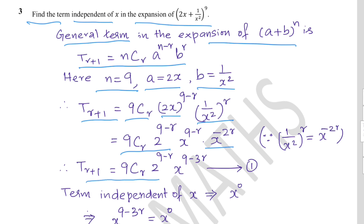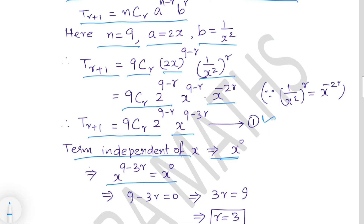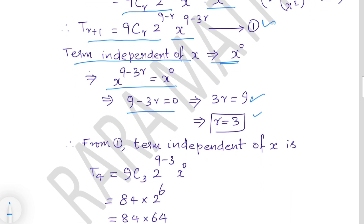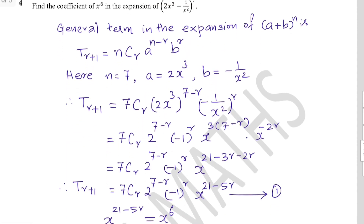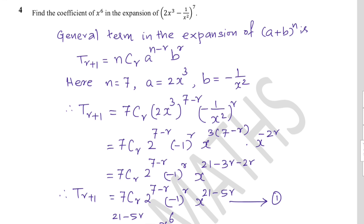Equation 1: T(r+1) = 9Cr · 2^(9−r) · x^(9−3r). For the term independent of x, set x^(9−3r) = x^0, so 9 − 3r = 0, giving r = 3. Substituting: T4 = 9C3 · 2^(9−3) · x^0 = 84 × 2^6 = 84 × 64 = 5376. The term independent of x is 5376.